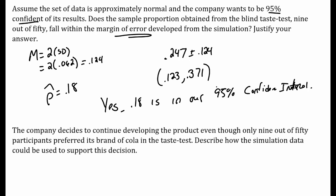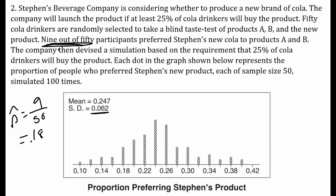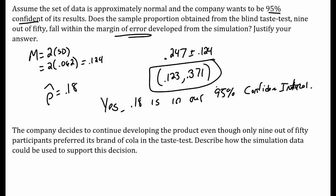To justify — do some math: there is my confidence interval. I did the mean plus or minus two standard deviations. I took the mean from the sampling distribution and did plus or minus two standard deviations.